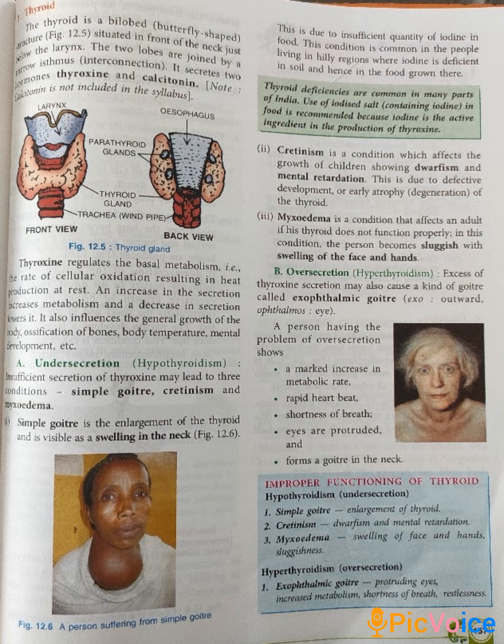Now moving to over-secretion: over-secretion means hyperthyroidism. If thyroxine is being produced more than normal, it leads to a type of goiter known as exophthalmic goiter. In your exam you may be asked to differentiate: simple goiter occurs due to hypothyroidism, whereas exophthalmic goiter occurs due to hyperthyroidism.